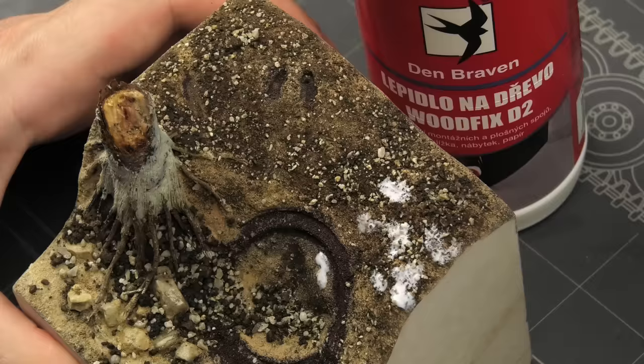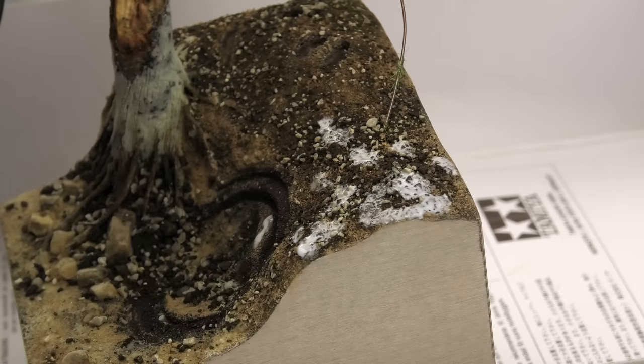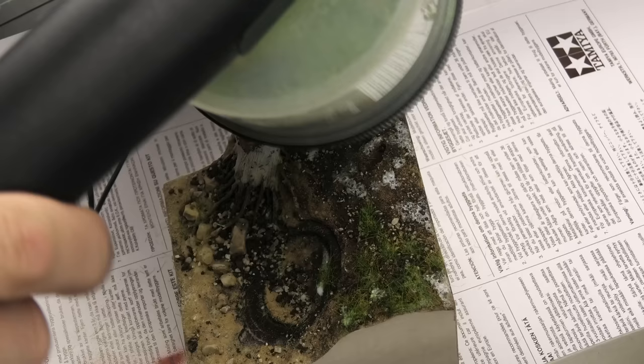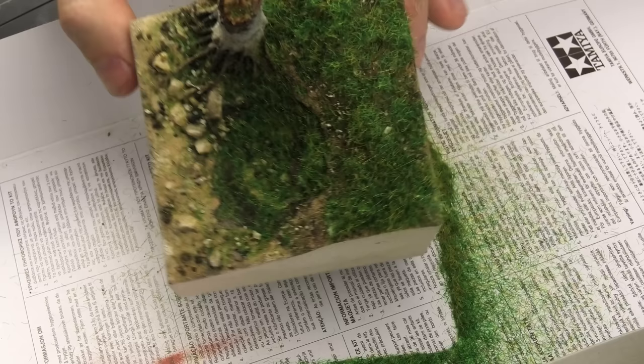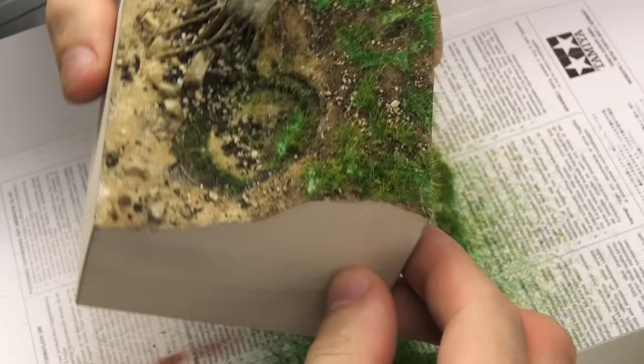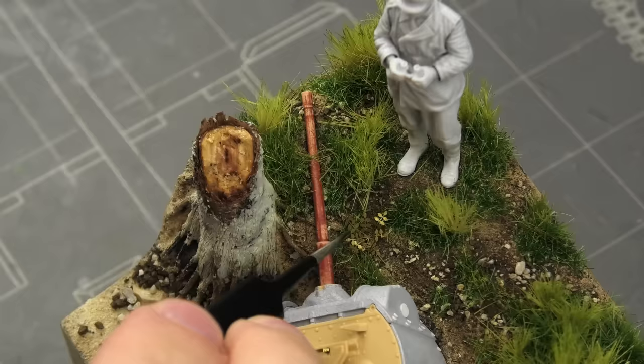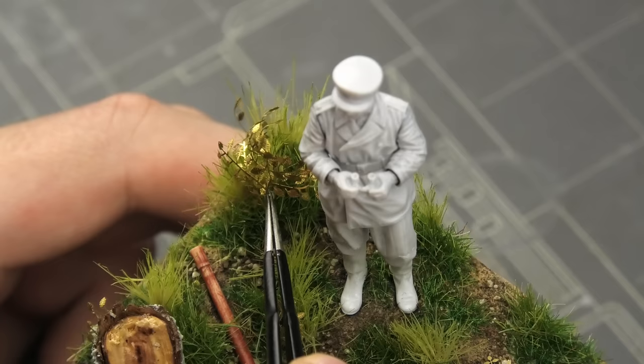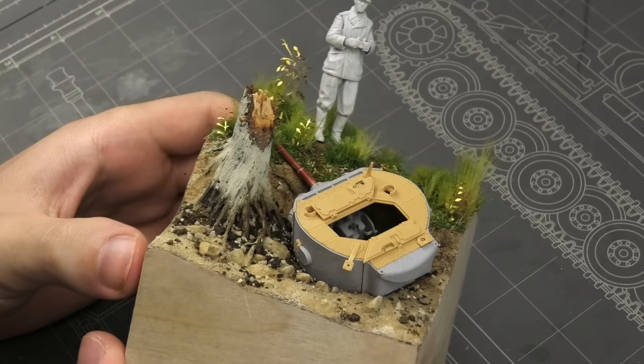Once everything was rock hard the next morning, I could proceed to the final stage of construction - adding some initial vegetation. This was just about gluing various lengths of static grass with the aid of a static grass applicator. I also added a bunch of photo-etched weeds, but the majority of vegetation will be made from paper plants. Those are easier to apply individually once the ground is painted.